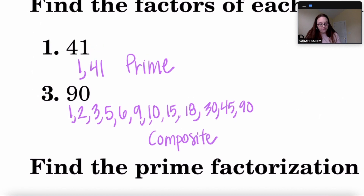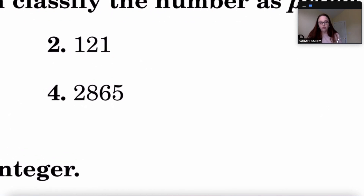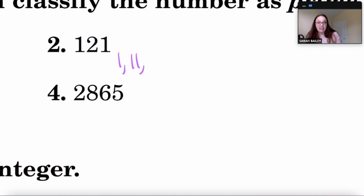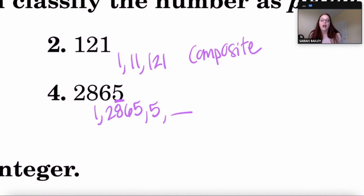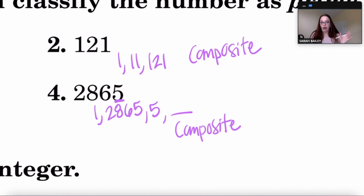For 121: one is a factor and 11 is a factor because 11 times 11 is 121. There are more than two factors so 121 is composite. For 2865: it's divisible by one and by five, so it already has more than two factors — it's composite.